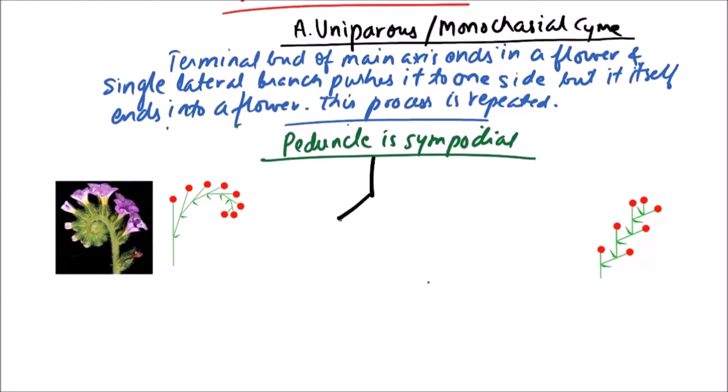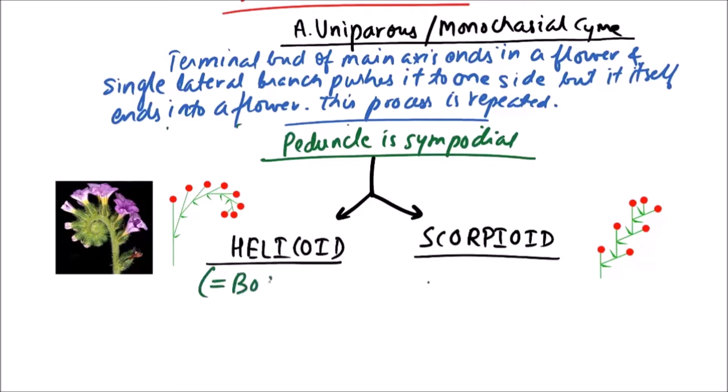The types of uniparous or monochaseal cyme are helicoid or scorpioid. Helicoid is also termed as bostryx, while scorpioid is also known as circinus.